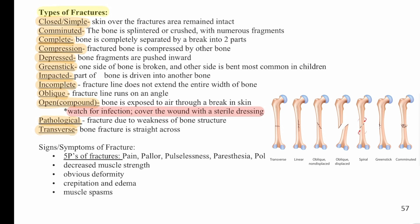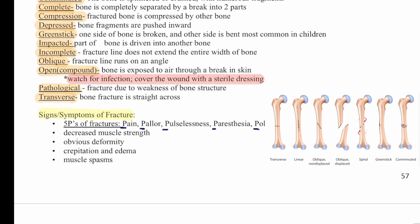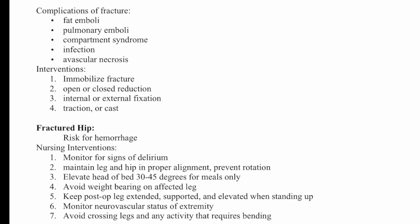Signs and symptoms of a fracture include the five P's: pain, pallor, pulselessness, paresthesia, and polar (cold). The patient will also have decreased muscle strength, obvious deformity, crepitus — which feels like creaking — edema, and muscle spasms.